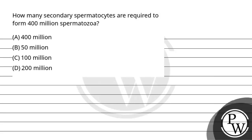Hello, so let's read the question. The question says: how many secondary spermatocytes are required to form 400 million spermatozoa? The first option is 400 million, second option is 50 million, third option is 100 million, and fourth option is 200 million.